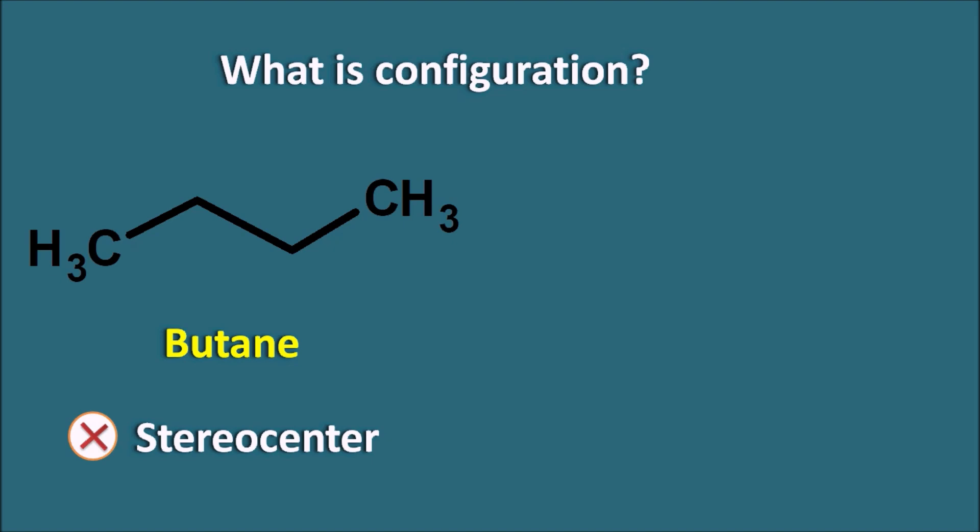But you can show the different configurations at different times within the space, which we call conformations. Conformational isomers are easily interconvertible, so they cannot be separated at room temperature and they will exist as a single compound. In this way, butane does not have any stereoactive center, so it cannot show configuration isomers.